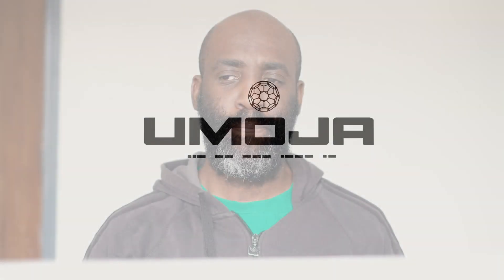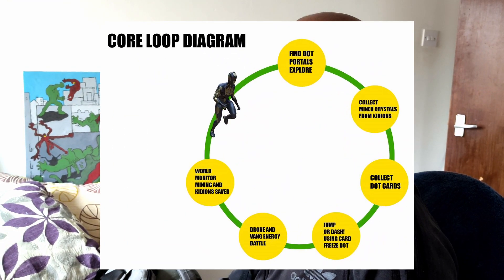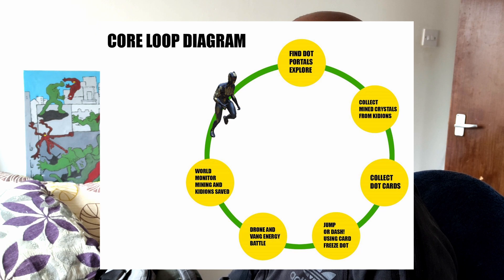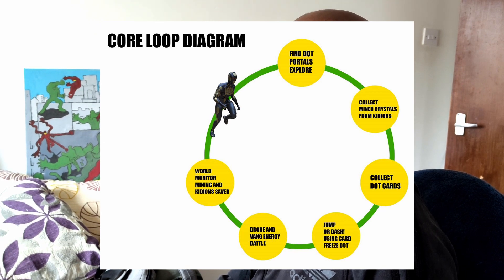Core game diagram. Anytime you're pitching a game, a key part of the game development process is the actual loop of what the game player has to consistently do to progress in the game. So we have core loop diagrams, and they themselves are then split into different parts.